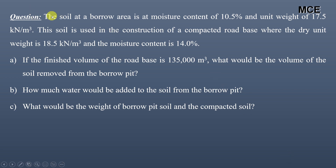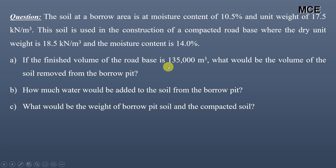The question states that the soil at a borrow area is at a moisture content of 10.5% and unit weight of 17.5 kN/m³. This soil is used in the construction of a compacted road base where the dry unit weight is 18.5 kN/m³ and moisture content is 14%. If the finished volume of the road base is 135,000 m³, what is the volume of soil removed from the borrow pit, how much water must be added, and what are the weights of the borrow pit soil and compacted soil?